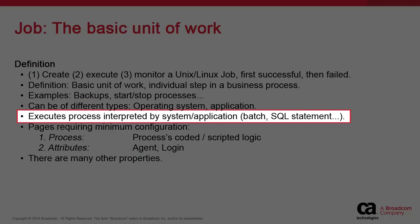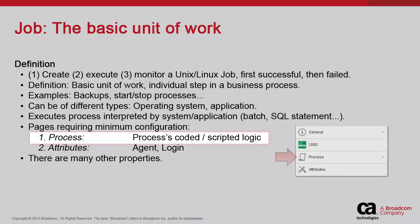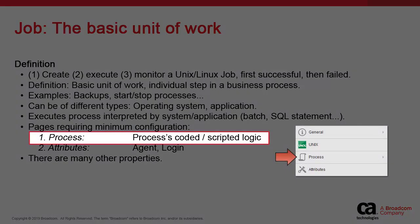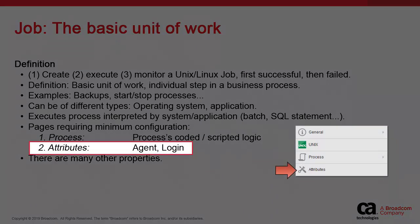It might be a command, shell, or Perl script, a native atomic script, or a SQL statement. We focus on two pages in the jobs definition. The first is the process page, which identifies what is to be executed. The second is the attributes page, in which we indicate the agents where the job is to execute.